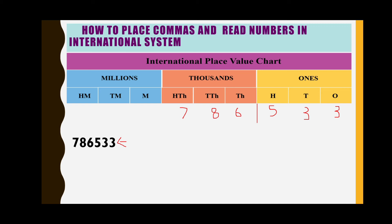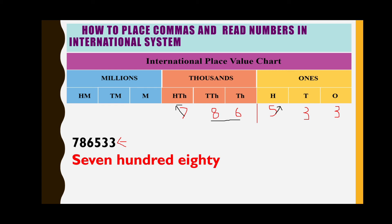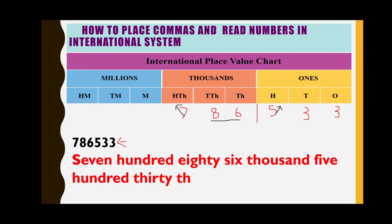We have two periods here: the ones period and the thousands period. Reading the number: seven hundred eighty-six comes under thousands period, so seven hundred eighty-six thousand; and five hundred thirty-three comes under the ones period. So the number is seven hundred eighty-six thousand five hundred thirty-three.